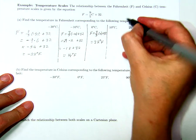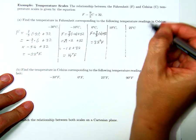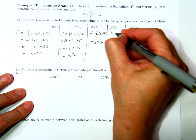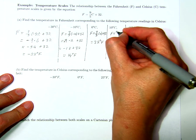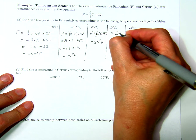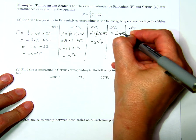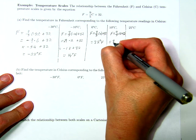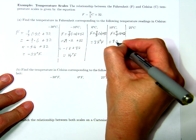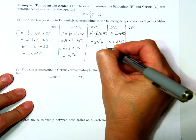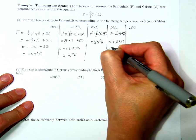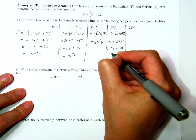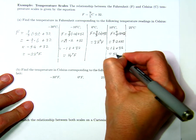And when the Celsius reading is 10, the Fahrenheit reading is 9 over 5 times 10 plus 32. That's equal to 9 times 2 plus 32, that's 18 plus 32, and that's 50 degrees Fahrenheit.